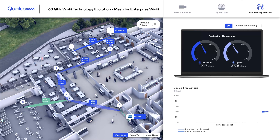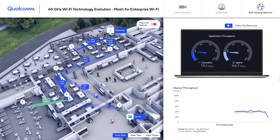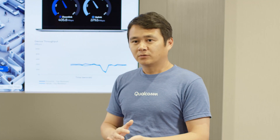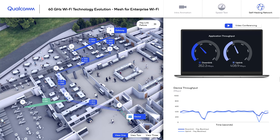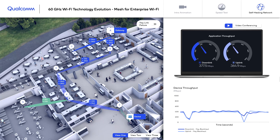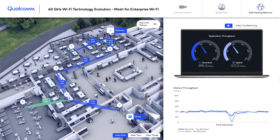First, we introduce bi-directional traffic in the network between the end user and the gateway. Then we break one of the backhaul links along the end-to-end path. Our devices monitor link stats in real-time, and the downstream access point will detect the link failure momentarily and switch the backhaul link to an alternative path. All of this happens underneath, and from the end user perspective, it only experiences a momentary throughput drop while the application resumes seamlessly.